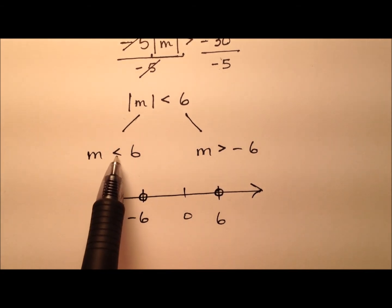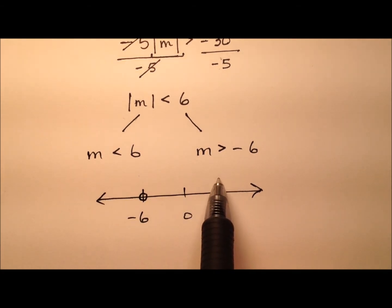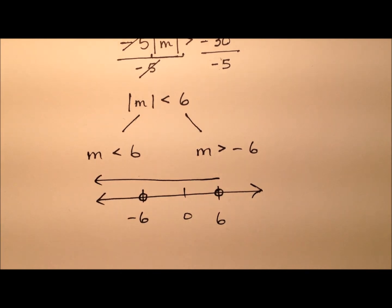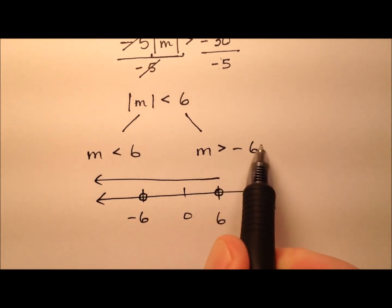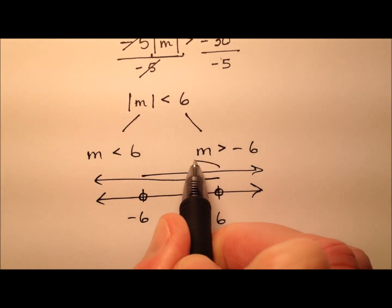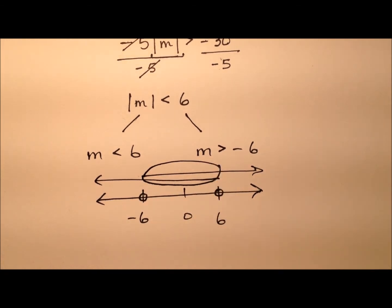And it looks like m is less than 6. So from this 6, we're going this way. And m is greater than negative 6. So from here, we're going this way. Well, we have this region of overlap right there.